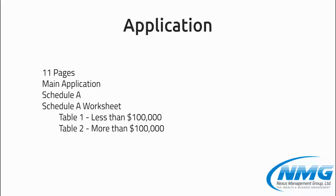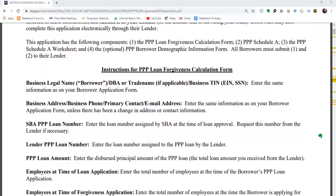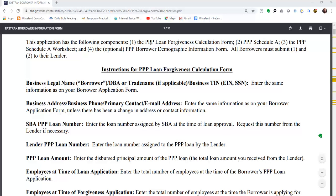The application involves about 11 pages. There is a main application, Schedule A, and a Schedule A worksheet with Table 1 and Table 2. The worksheet is needed to complete Schedule A, and Schedule A is needed to complete the main application. The application must be submitted to your lender, and it also includes an optional demographic information sheet.